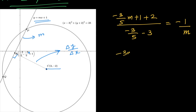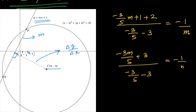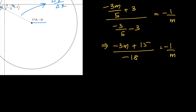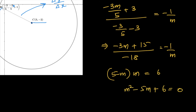So (−3m/5 + 3)/(−3/5 − 3) = −1/m, which gives (−3m + 15)/(−18) = −1/m. Cancelling 3: (5 − m)·m = 6, so m² − 5m + 6 = 0. Again we get the same quadratic, and the values are m = 2 and m = 3 — this time much easier.